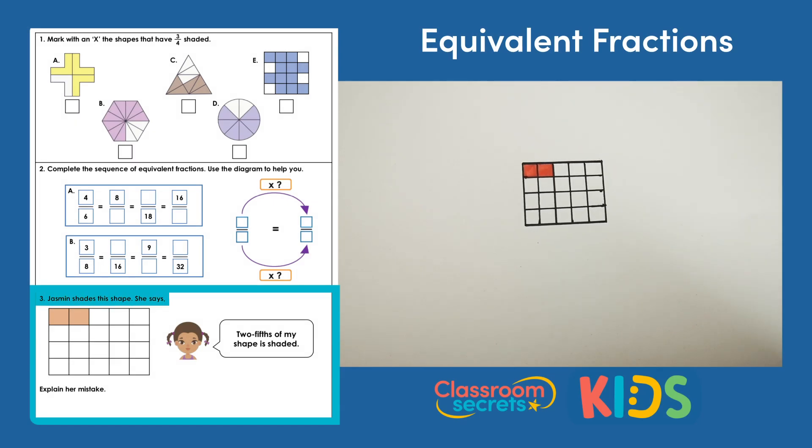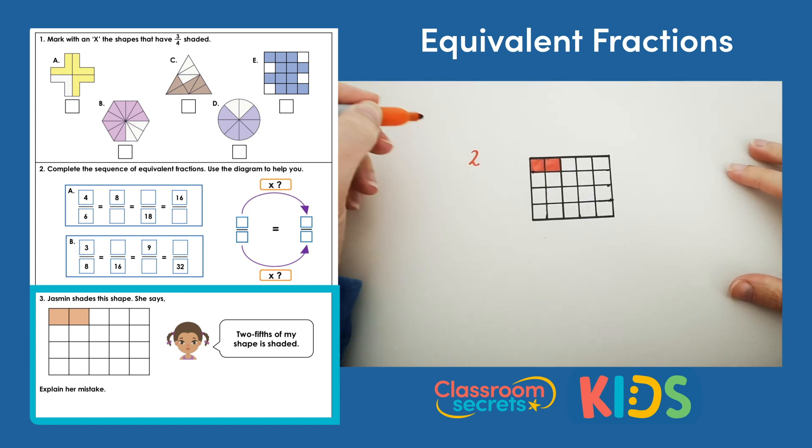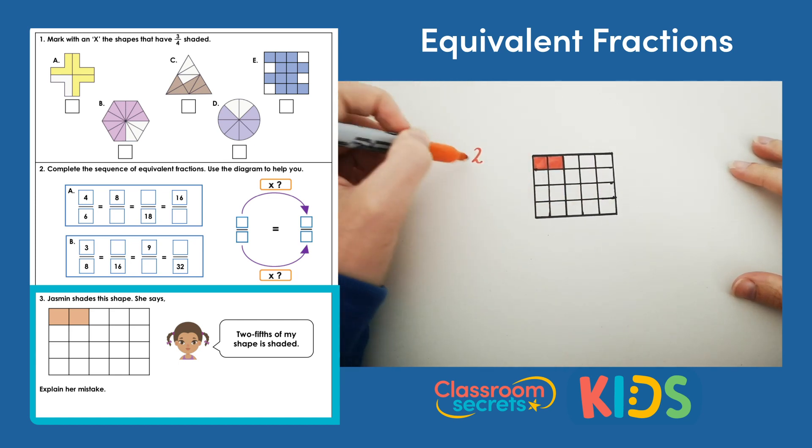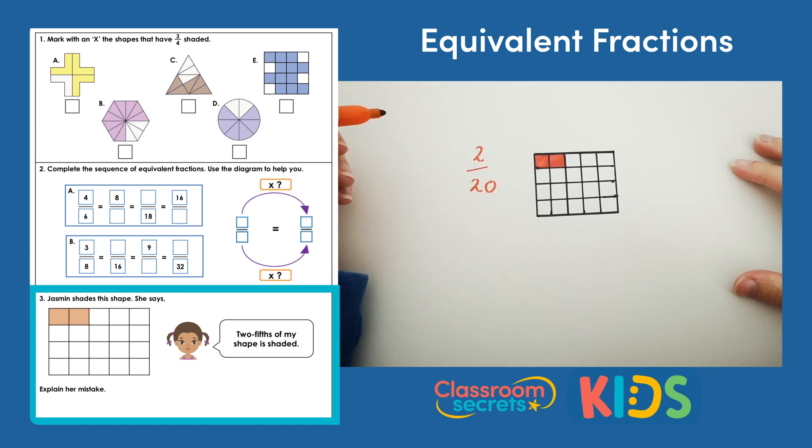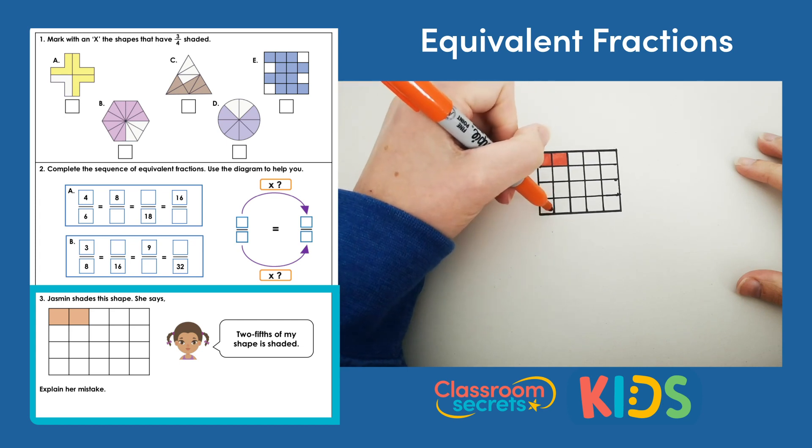Question 3. Jasmine shades this shape. She says 2 fifths of my shape is shaded. Explain her mistake. So if we look carefully at Jasmine's shape we can see that two squares in her shape have been shaded, and that in total there are 5, 10, 15, 20 parts to the shape. So Jasmine has shaded 2 twentieths of this shape. If Jasmine wants to shade 2 fifths of this shape, what she'll need to do is shade two full columns like so.